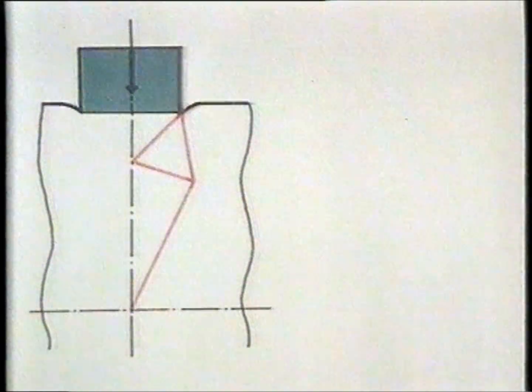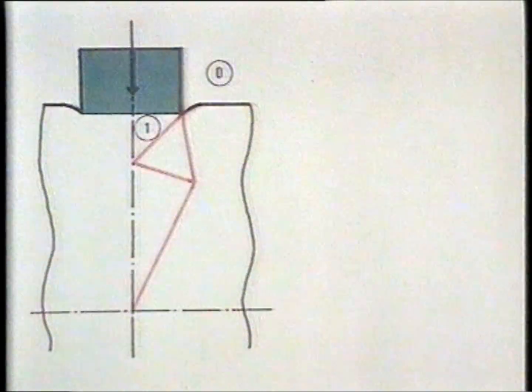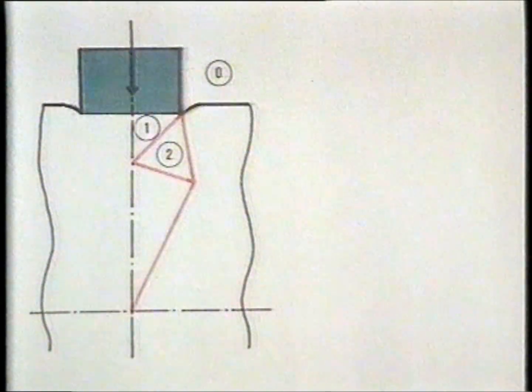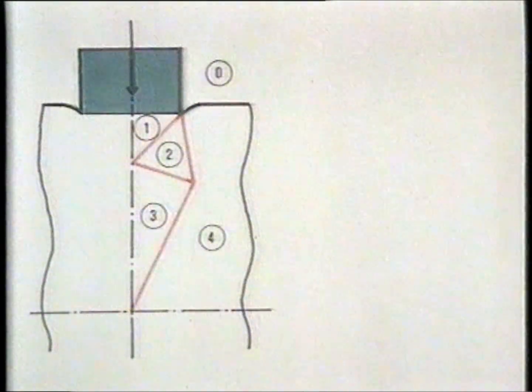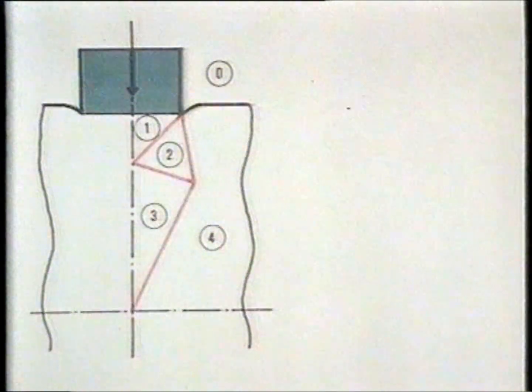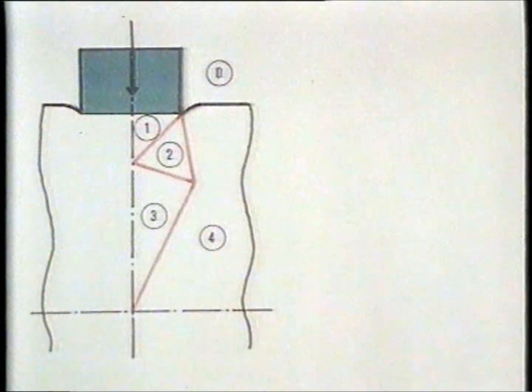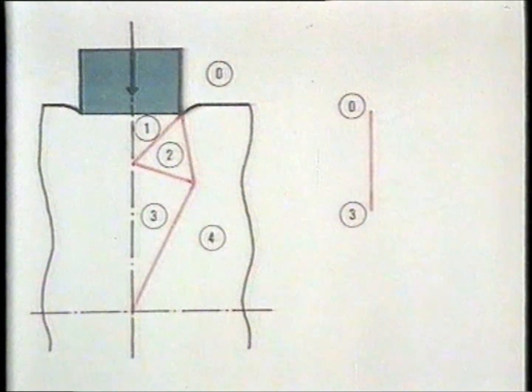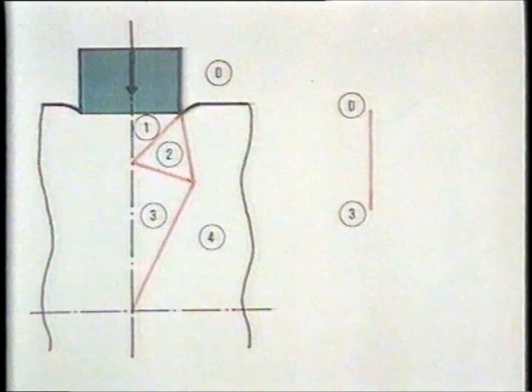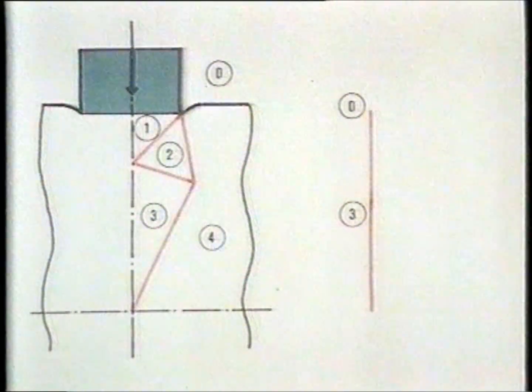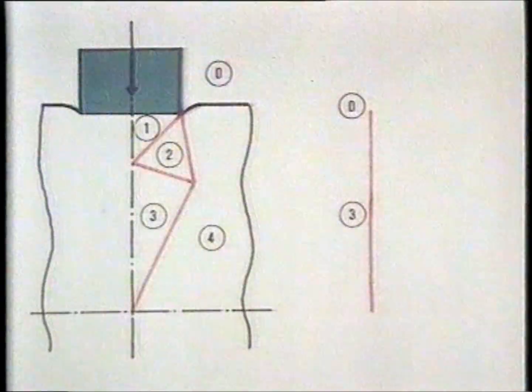As before, the hodograph associated with this field is constructed by first numbering its regions. We only consider one quarter field since it has double symmetry. The velocity in region three is vertical and assumed known. It is drawn first and we extend it since we know that the velocity of region one is also vertical.